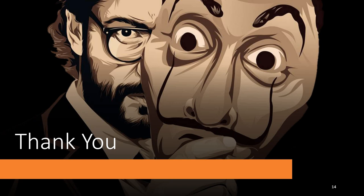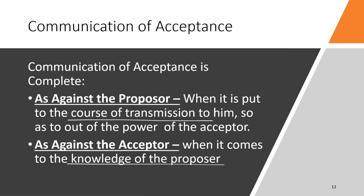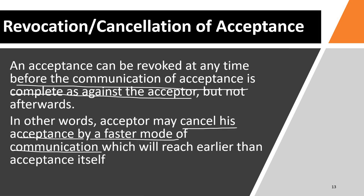To summarize: communication can be done by words spoken or written, by conduct, or by omission of something that was supposed to be done. It is complete against the proposer when the acceptance is sent, and complete against the acceptor when it reaches the proposer. Both parties are then bound — I am bound to buy your car the moment you accept, and you are bound to sell it the moment I get to know about your acceptance. Before I get to know, you can still revoke it. That is what we mean by communication and revocation.